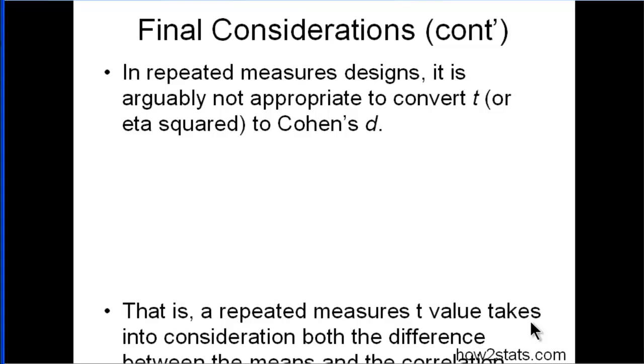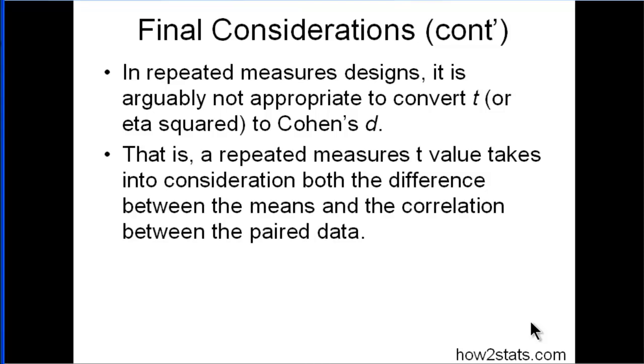And that's because in the repeated measures T value, if you're doing an ANOVA or a paired T test, it takes into consideration the correlation between the time 1 and time 2 data. So that makes the T value bigger. And in my opinion, that's not the way that Cohen's D should be used.